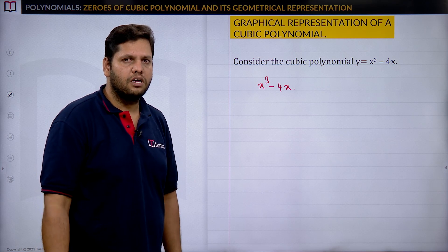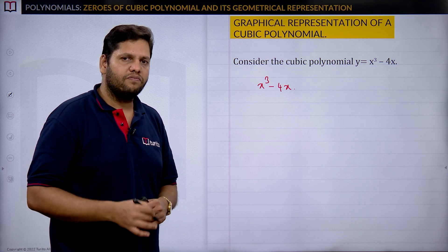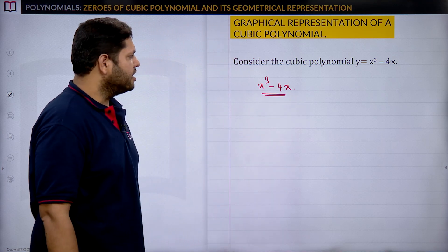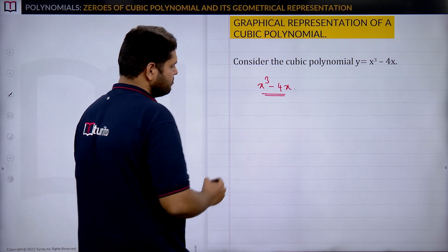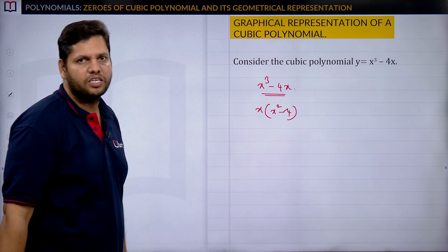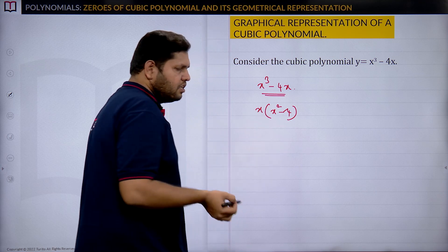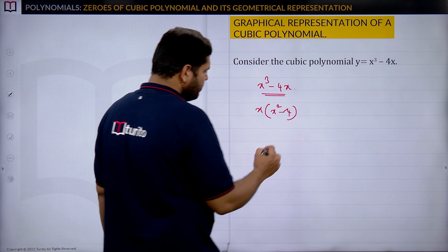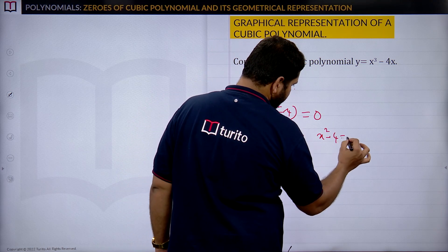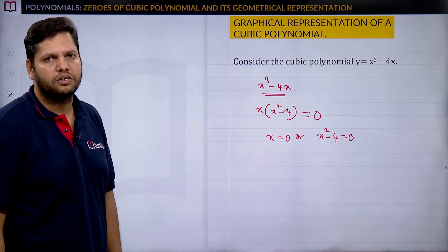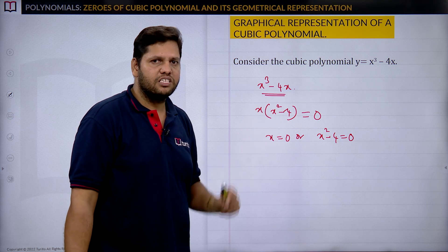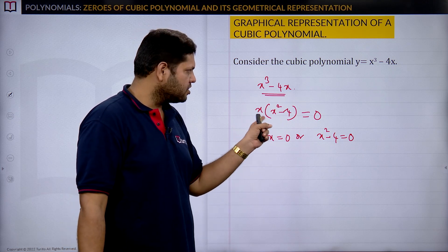To find the zeros of the cubic polynomial x³ − 4x, we first do factorization, then equate to zero. The common term is x, so we take x out: x(x² − 4) = 0.